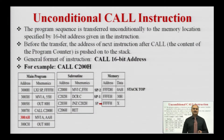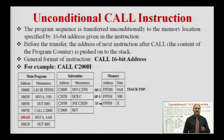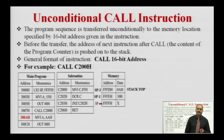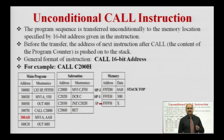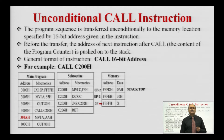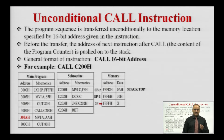First we will discuss the branch control group instruction. The first instruction is the unconditional CALL instruction. The CALL instruction is used to call a subroutine in the main program. Examples of subroutines are the delay subroutine and display subroutine. A subroutine is a small program called in a main program to perform a particular task — it may be a delay subroutine to generate a certain amount of delay, or a display subroutine to display results on a display device.